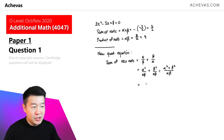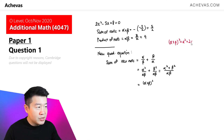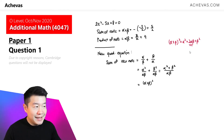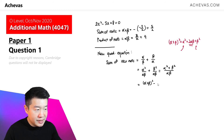For alpha squared plus beta squared, we can make use of the expansion of alpha plus beta squared, which equals alpha squared plus 2 alpha beta plus beta squared. Since we only want alpha squared plus beta squared, we subtract the 2 alpha beta term. So alpha squared plus beta squared equals alpha plus beta squared minus 2 alpha beta, and this is divided by alpha beta.